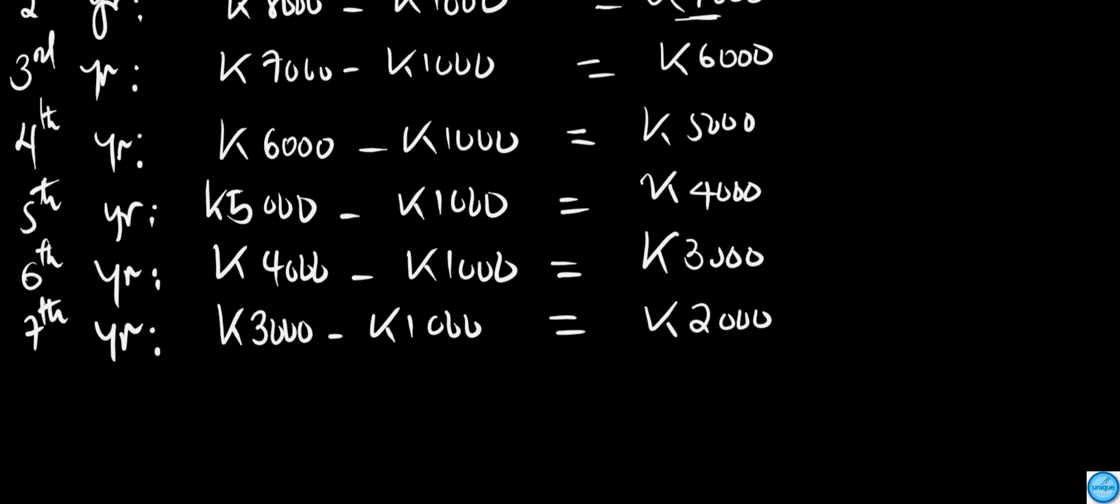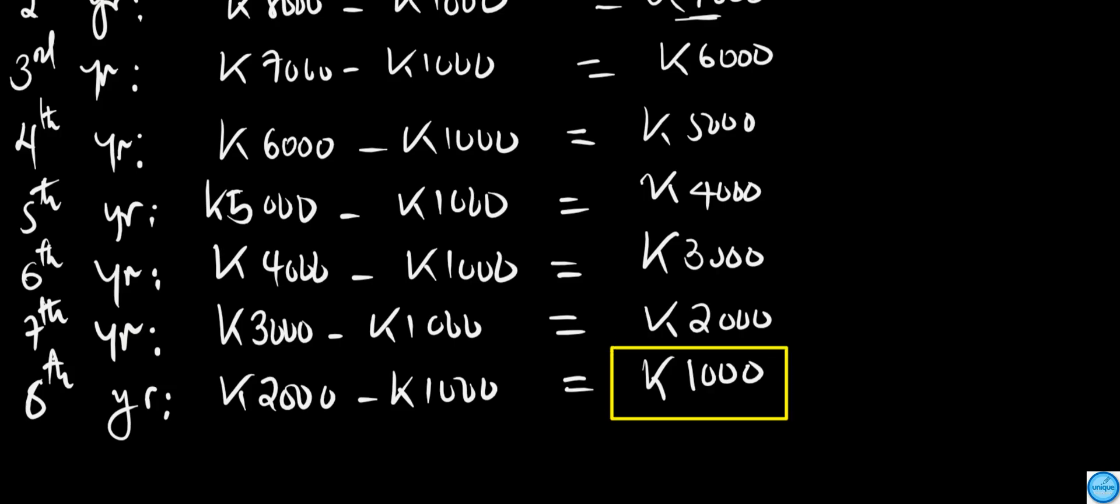In the 7th year, it will be K3,000 minus K1,000, which equals K2,000. Then in the 8th year, according to the question, it will be K2,000 minus K1,000, which equals K1,000. So the cost of our sprayer after the 8th year is K1,000. That's how we can solve it.